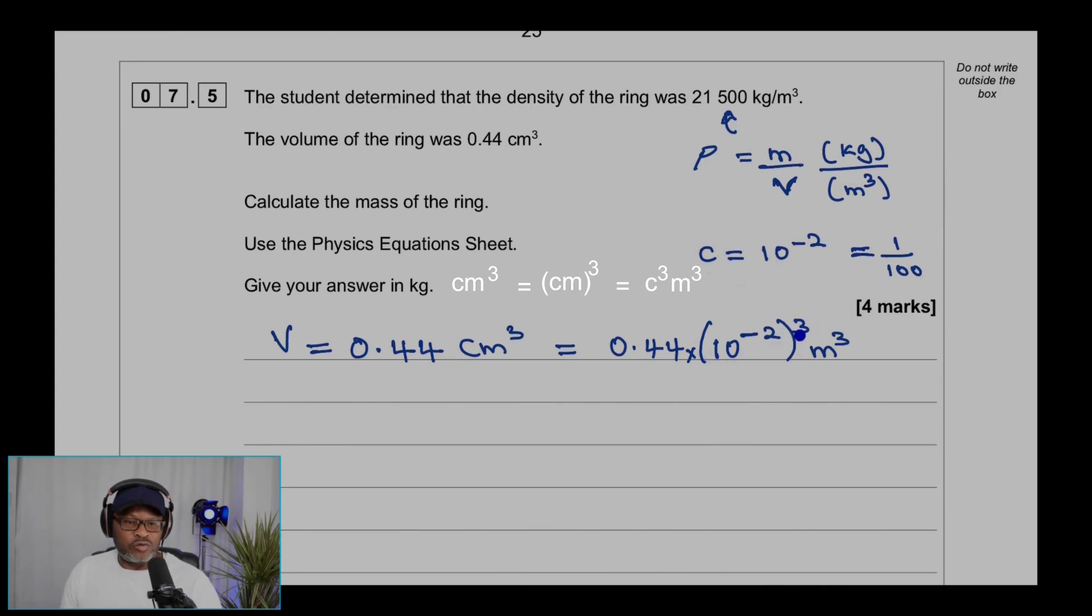The cube is applied to both. We replace the C with that. Applying the indices here, this will be 3 times minus 2, and therefore you will get 0.44 times 10 to the power minus 6 (because 3 times minus 2 is minus 6) meter cube. Now we have the volume, but this is 0.44 times 10 to the power minus 6. If I multiply this by 10, I have to divide that by 10 in order to change 0.44 to 4.4.